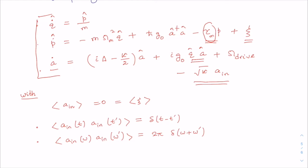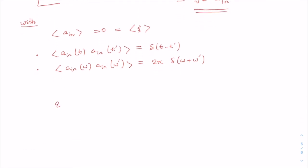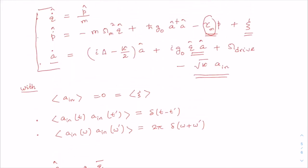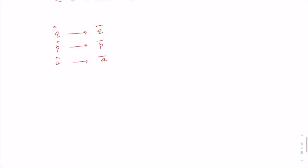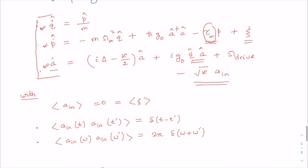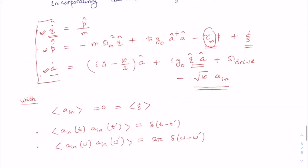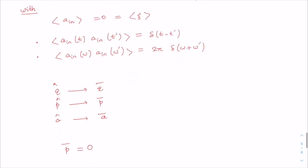To find the steady state solution, we denote the steady state values: q̄ for position, p̄ for momentum, and ᾱ for the optical mode operator a. We set the left-hand side of the Langevin equations to zero. From the equation q̇ = 0, we immediately get p̄ = 0.